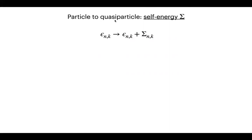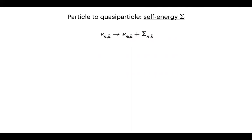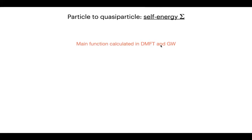I want to explain what the self-energy is, because I found it confusing when I started in the field. In a DMFT or Fermi liquid theory calculation, one way to simulate many-electron effects beyond single-particle theory is to add a self-energy. The self-energy is calculated in DMFT and GW, for example.